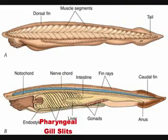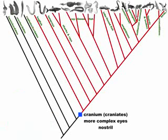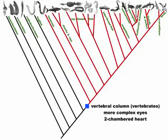4. Pharyngeal gill slits. In aquatic chordates, these develop into full-fledged gills, while in others, like humans, they appear in embryos but are lost before birth and never become gills. Gills in general are also found in other animals, including some worms. 5. An endostyle — a ciliated groove in the pharynx that secretes mucus and catches food, found in cephalochordates and urochordates. In lampreys, the larvae have an endostyle, but it develops into the thyroid gland in adults, which is the form it takes in most chordates. The gill arches common to the chordates are typically supported by cartilage or bone.